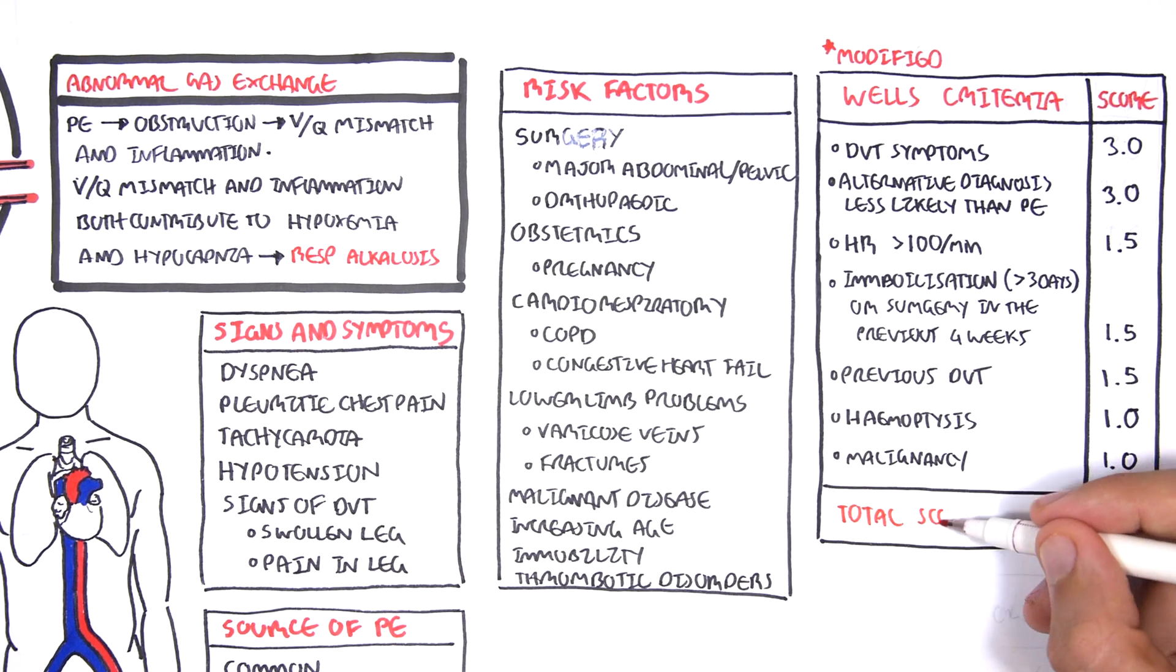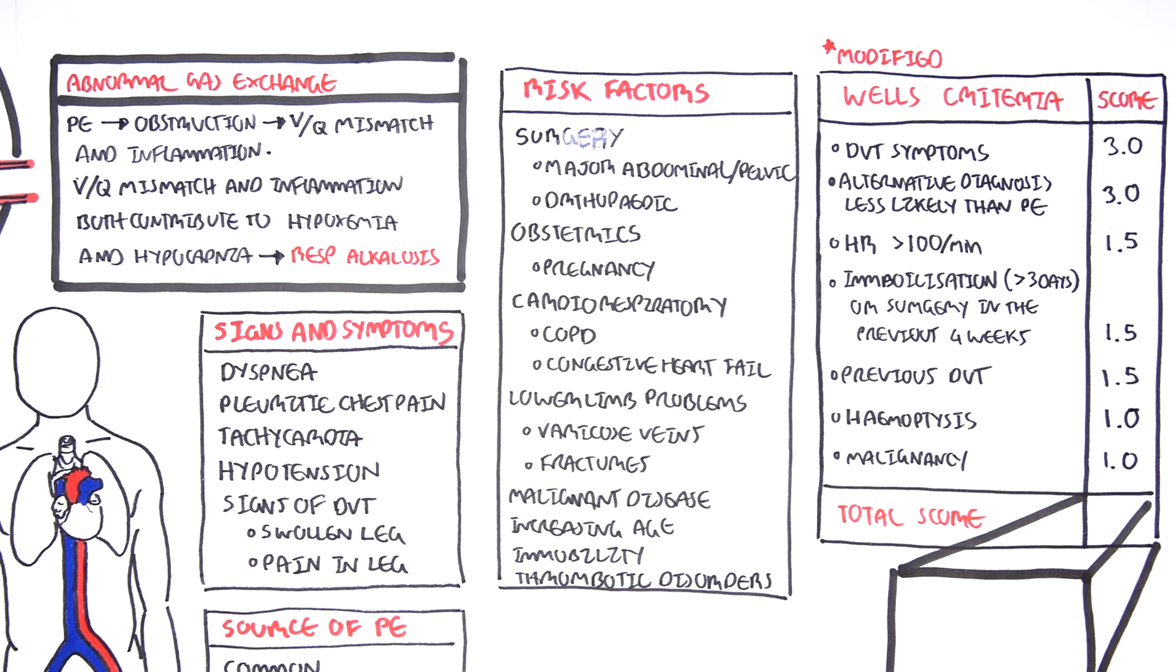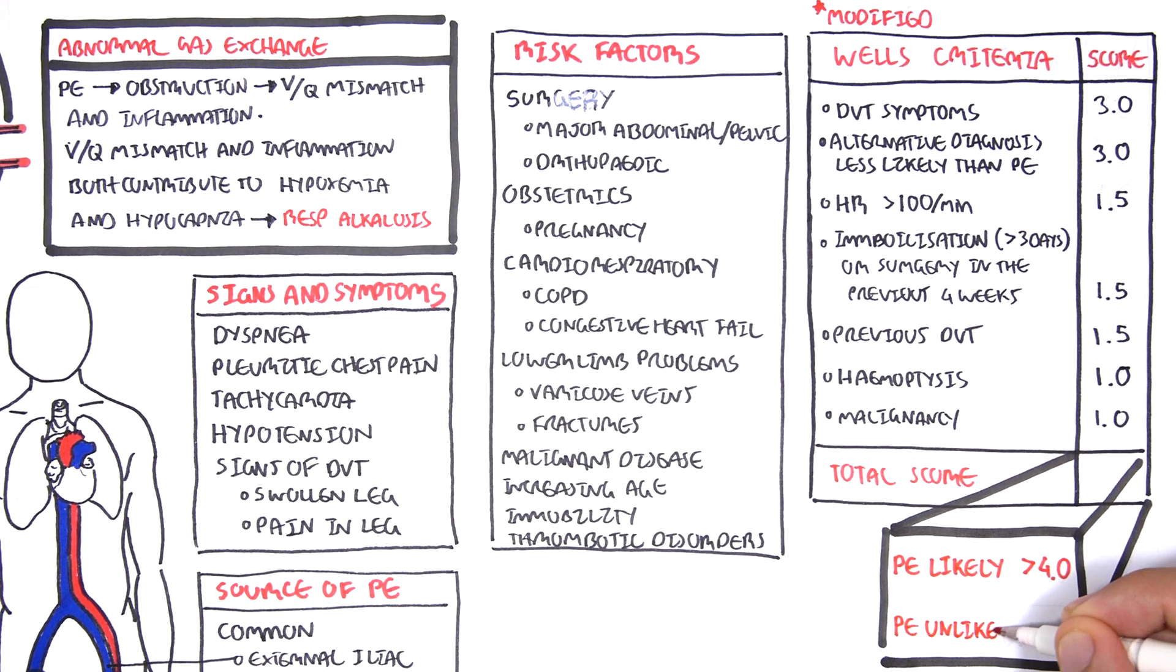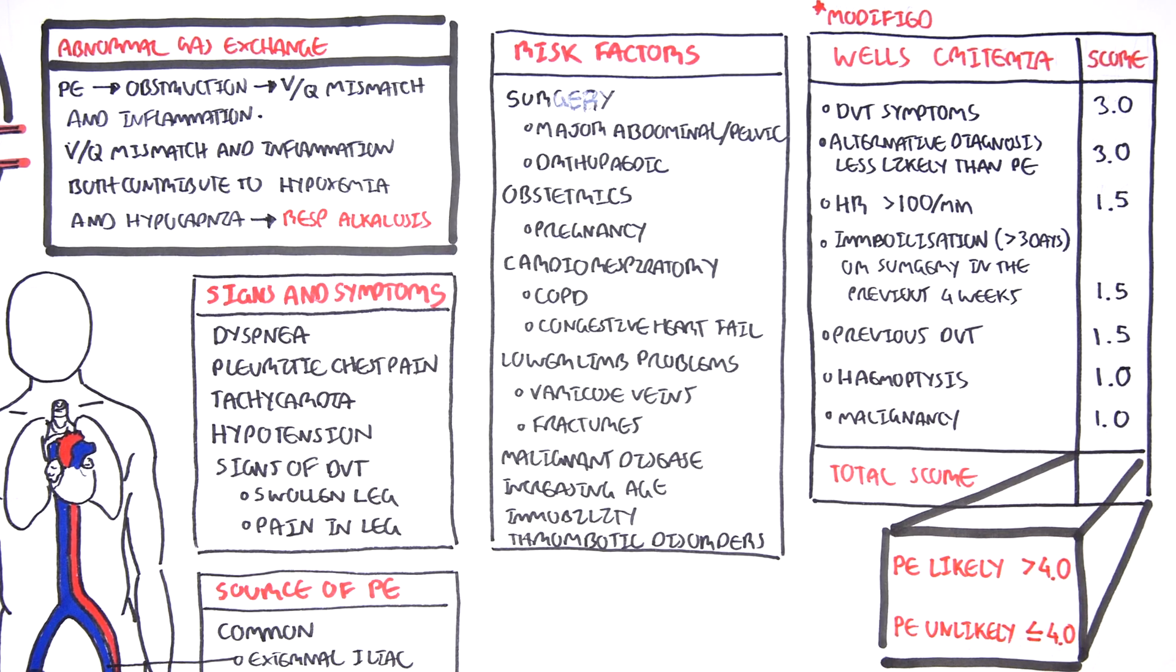Tallying this up, you get a total score. If your score is greater than 4, pulmonary embolism is likely. If you have it less than or equal to 4, pulmonary embolism is unlikely.